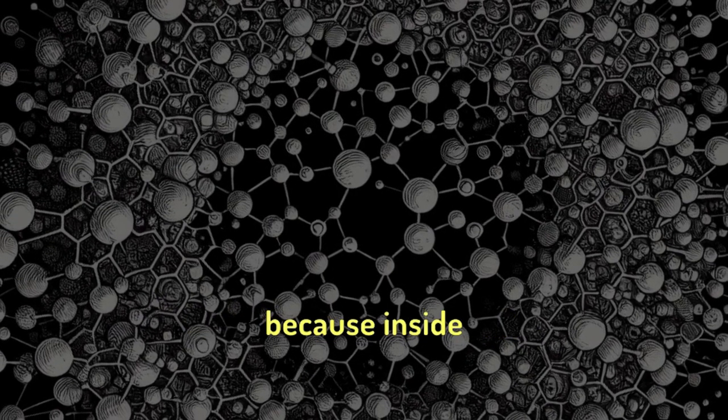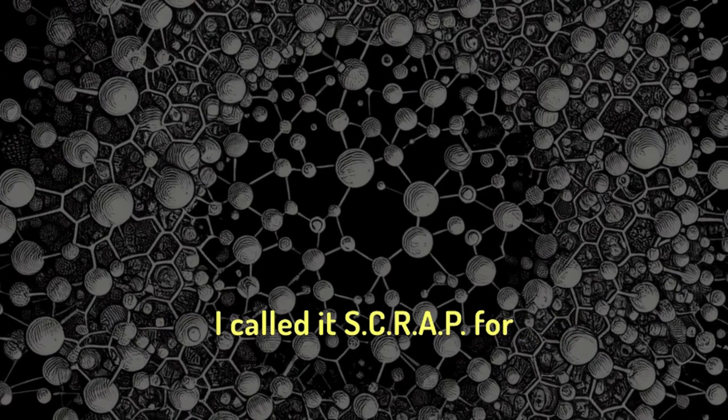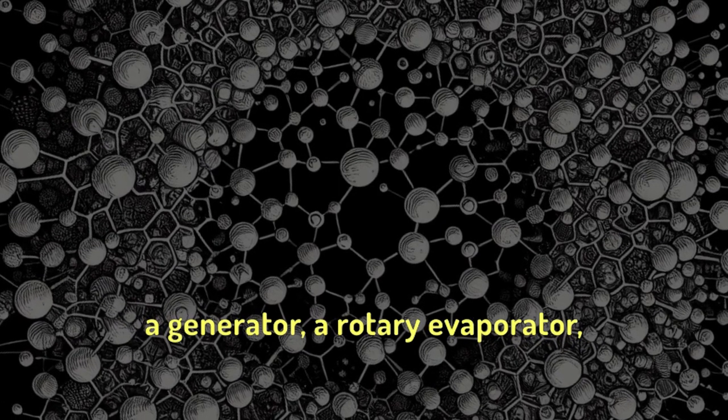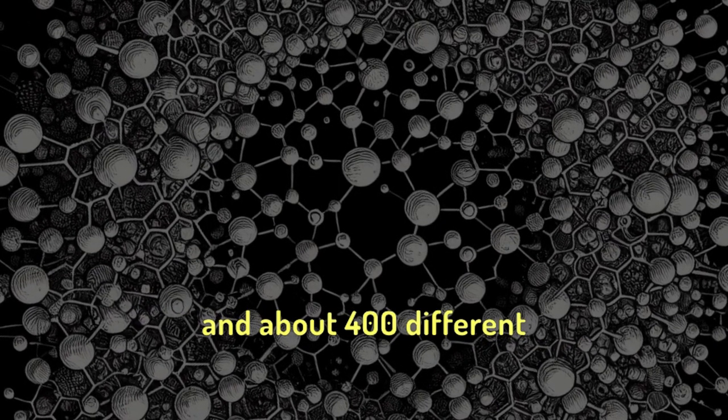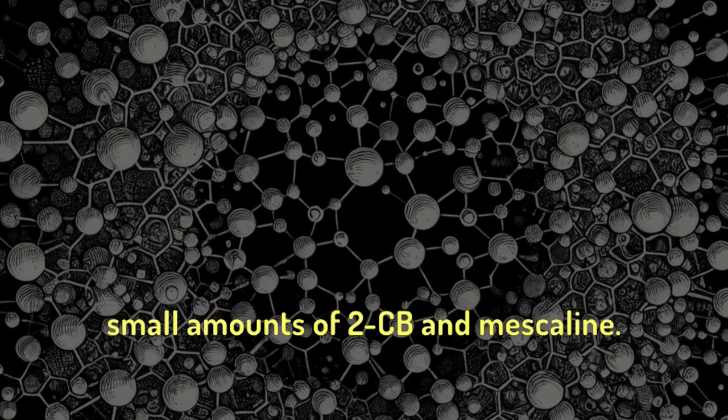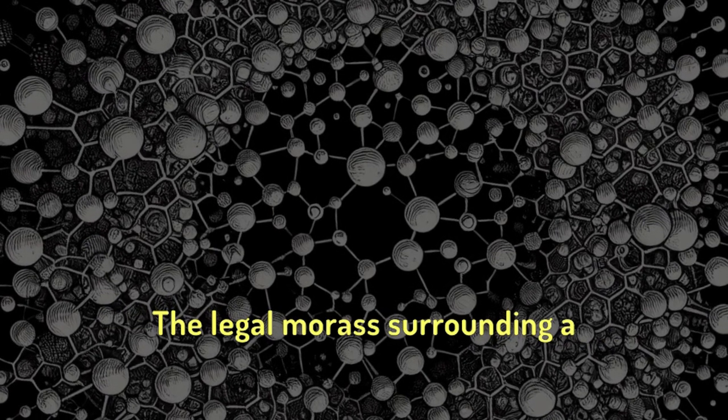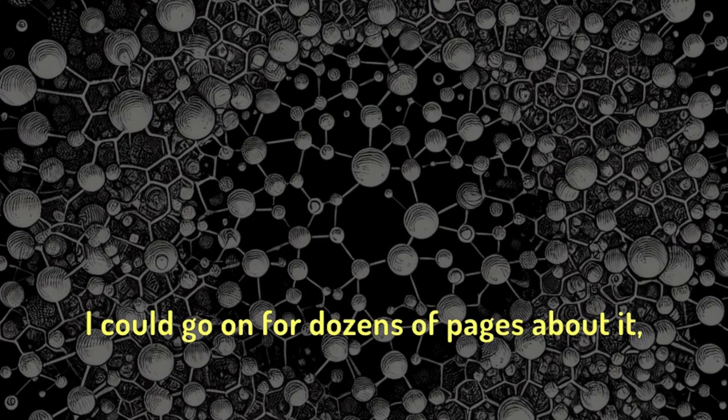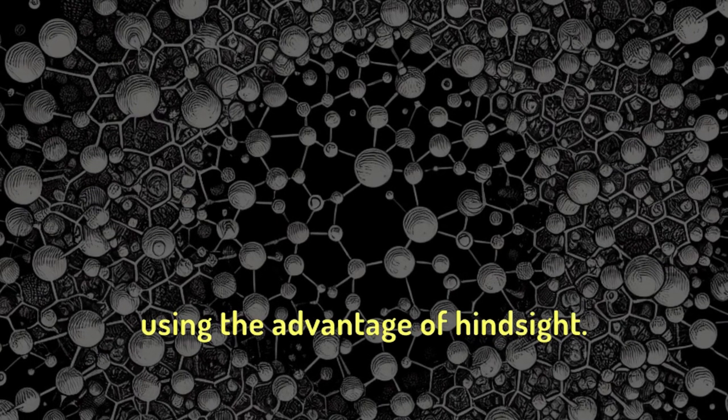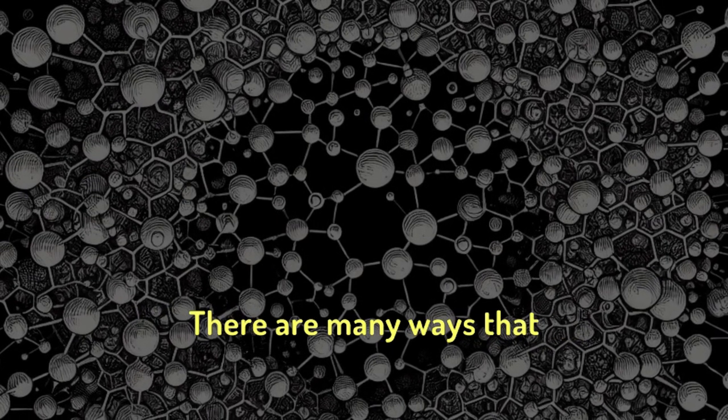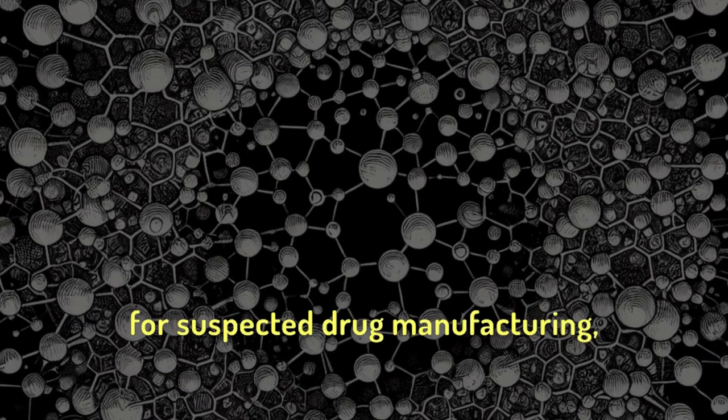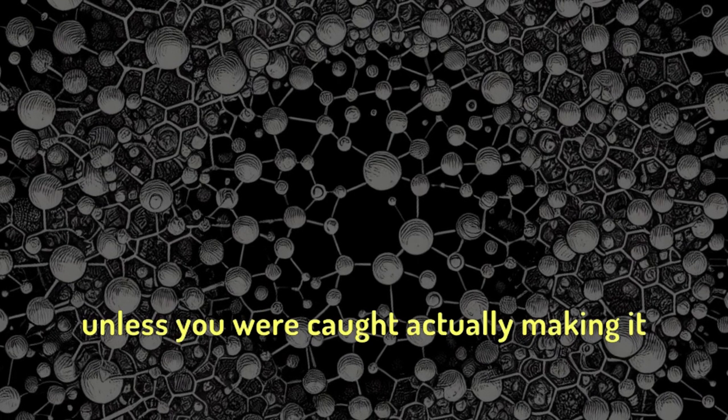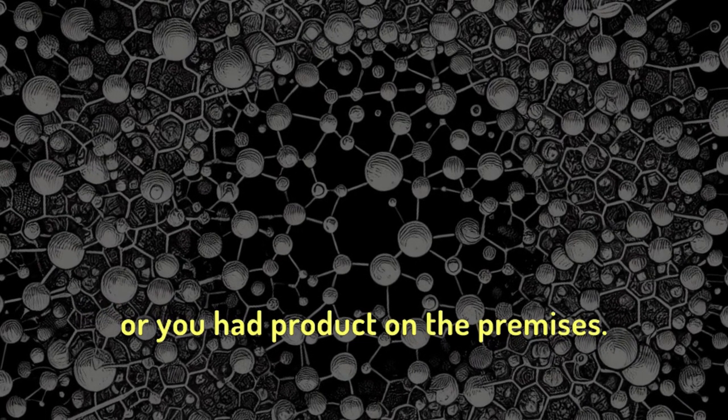Good thing I got immunity, because inside there was a complete portable lab. I called it SCRAP for Self-Contained Reaction Apparatus. A generator, a rotary evaporator, and about 400 different chemicals, and some small amounts of 2CB and mescaline. The legal morass surrounding a manufacturing case is unbelievable. I could go on for dozens of pages about it, but instead I will summarize using the advantage of hindsight. There are many ways that one can be prosecuted for suspected drug manufacturing, and the safest route the prosecutor can take is just to stick you with the precursors unless you were caught actually making it, or you had product on the premises.